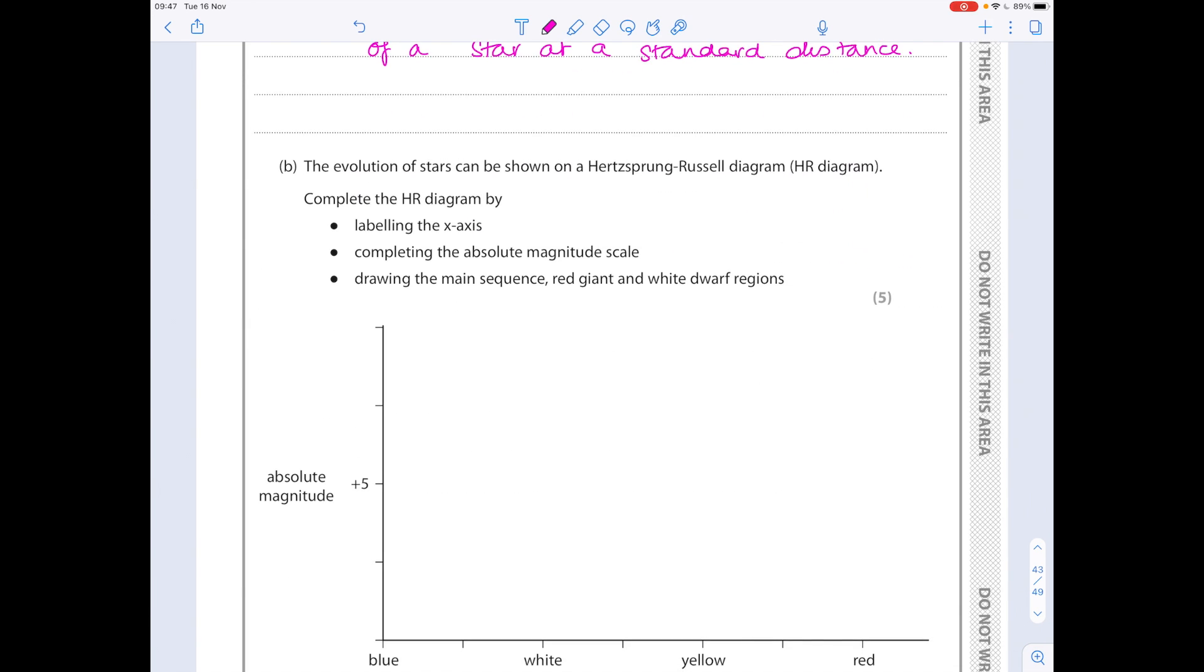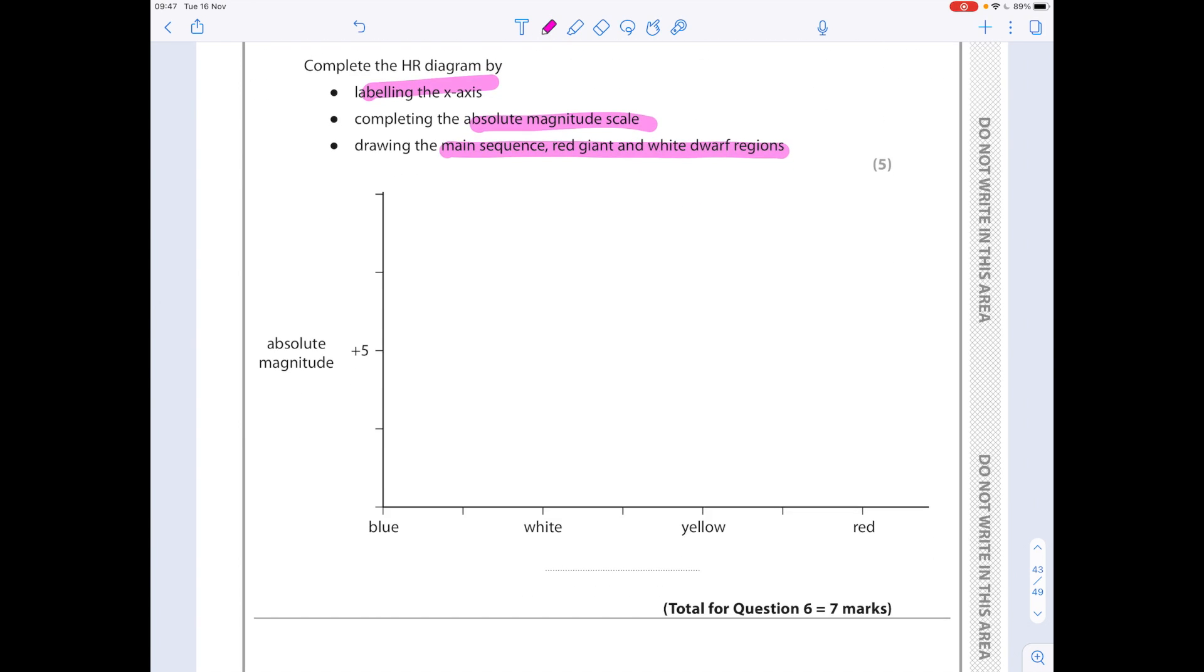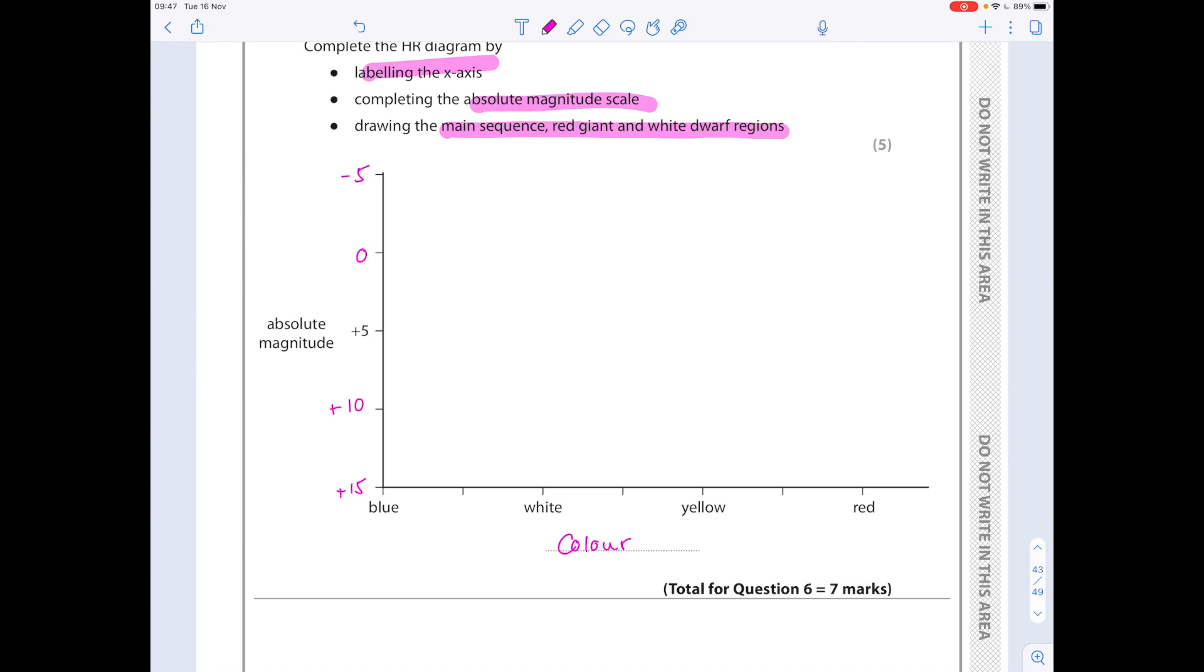The evolution of stars can be shown on a Hertzsprung-Russell diagram. Complete the HR diagram by labelling the x-axis, completing the absolute magnitude scale, drawing the main sequence red giant and white dwarf regions. So, remember the y-axis scale is strange in that it goes from positive to negative. So, let's just make sure we're evenly spaced there, which is why I'm taking that up to plus 10, followed by plus 15. Let's label the x-axis now, which is the colour of the star.